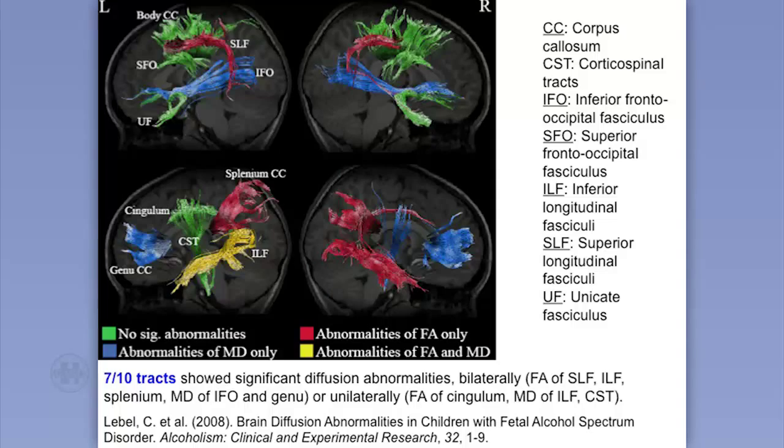The corpus callosum is the largest white matter track in the brain — it connects the left hemisphere and right hemisphere, and it's really important for transferring information and coordinating decisions across the brain. Studies have actually shown that prenatal alcohol exposure can directly affect the corpus callosum. Some studies have documented complete agenesis — almost a missing corpus callosum — in individuals with really severe fetal alcohol syndrome or fetal alcohol spectrum disorder.